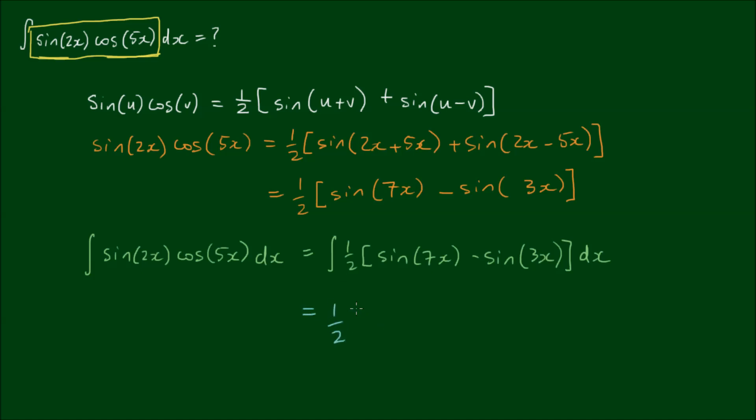A half can come out the front of each integral. So it's the half times the sine of 7x dx minus a half by the integral of sine of 3x dx. So evaluating these integrals now, we have a half.